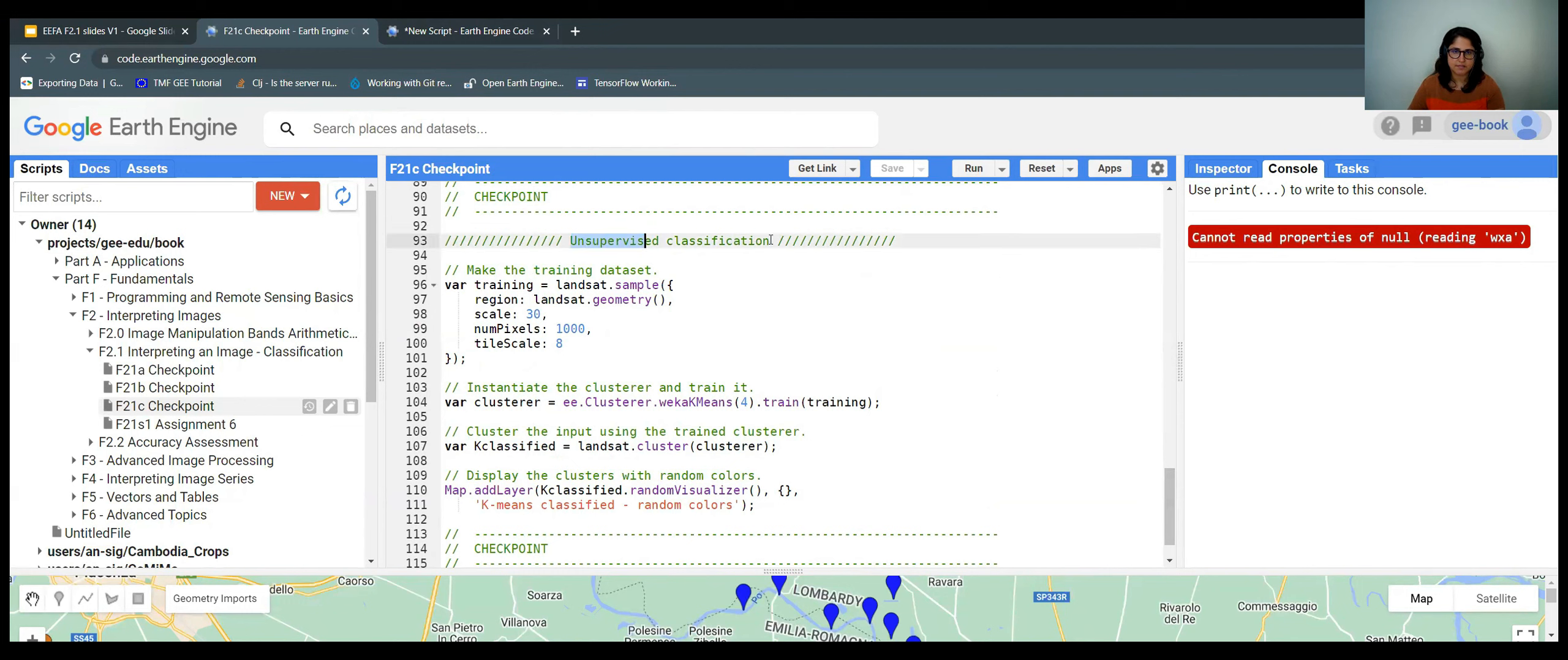So as I said, now we have unsupervised classification. Here we are making a training data stack. So it doesn't have any labeled points with the classes. So we just sample pixels randomly. So here Landsat sample. We have the image footprint at 30 meters as the scale and a thousand pixels.